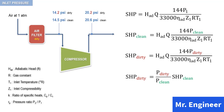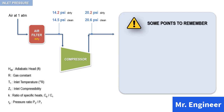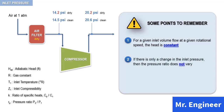Substituting for P dirty and P clean, we can see that a decrease in inlet pressure will result in a decrease in power requirement. Some points to remember: first, the head produced by an impeller for a given rotational speed and a given inlet flow is a constant. Second, if there is only a change in the inlet pressure, then the pressure ratio does not vary. Finally, keep in mind the useful relationship describing the effects of a variation in inlet pressure on shaft horsepower.